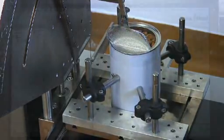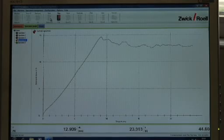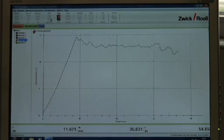Peel testing is used to measure the strength of a seal and the uniformity of a seal, particularly in tray and lidding applications.